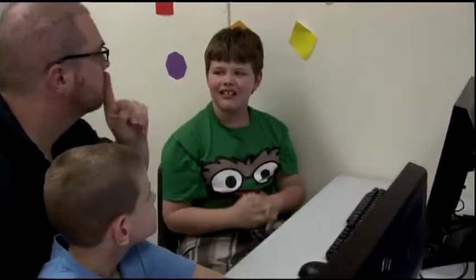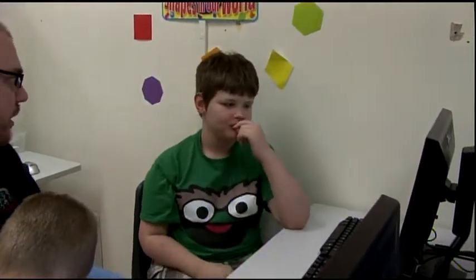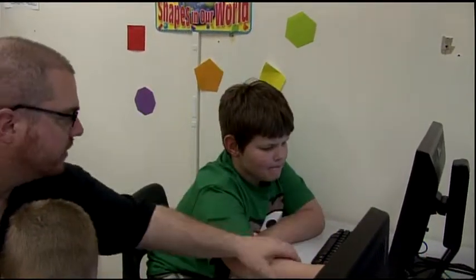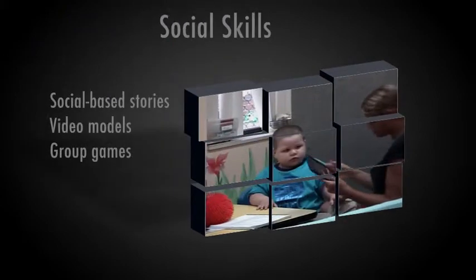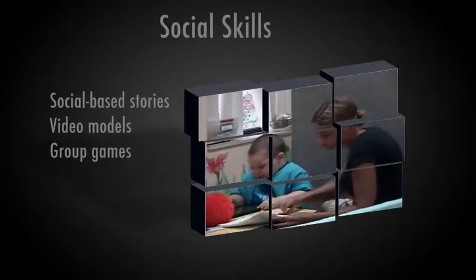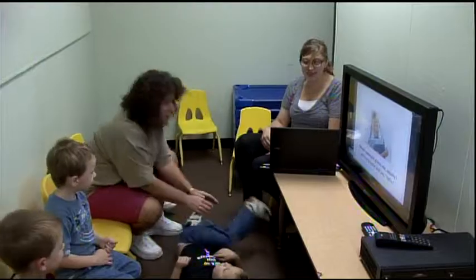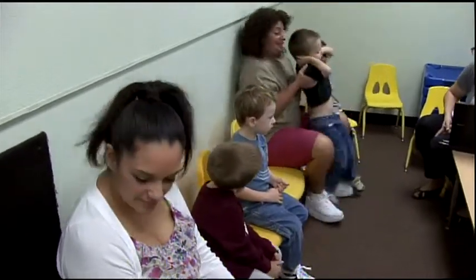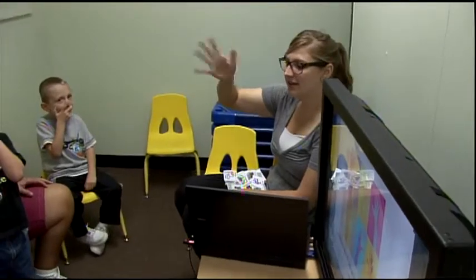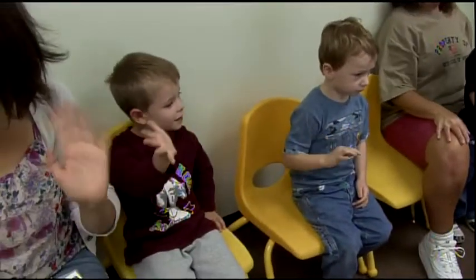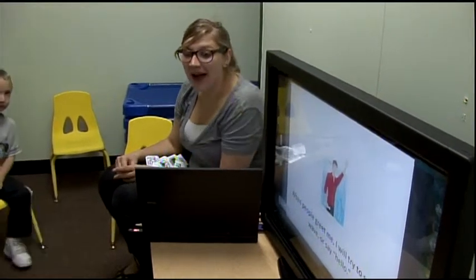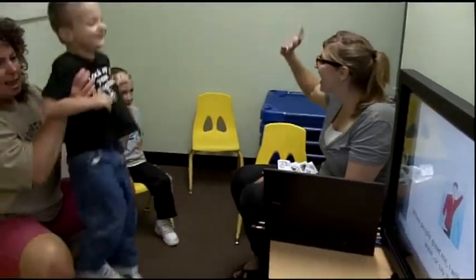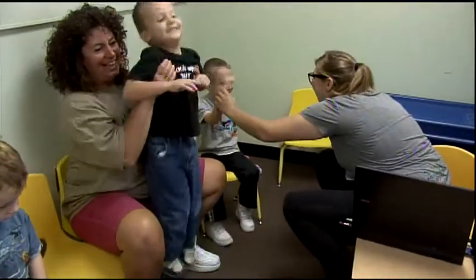Deficits in social skills are a defining characteristic of autism spectrum disorders. Various forms of high and low-tech equipment can be used to target social skills, including social-based stories presented on paper or the computer, video models, and technology-based games. Social-based stories can be presented via paper, computer, or smart board to an entire class or to individual children as part of a multi-modal social skill building lesson. For example, a teacher could present a story about initiating greetings with developmentally appropriate text and pictures via PowerPoint, then model the behavior, and finally instruct students to role-play the skill with prompts and praise as needed.